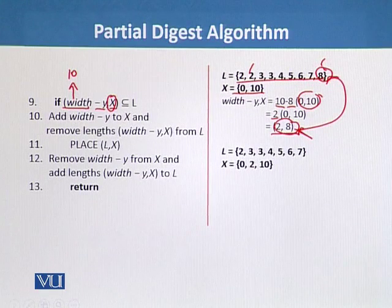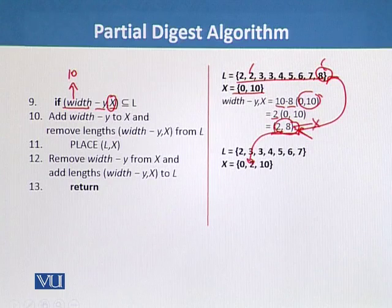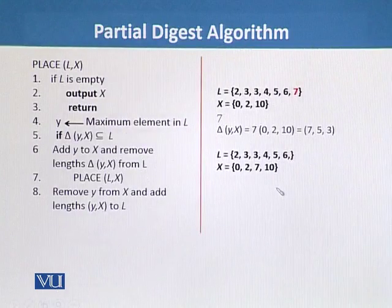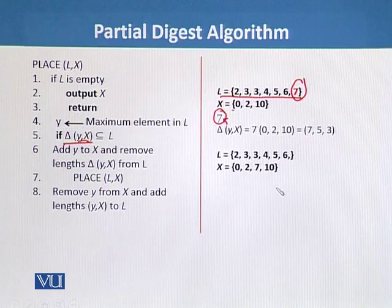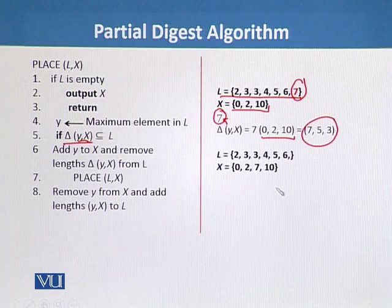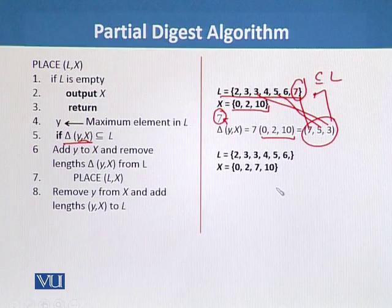Since {2, 8} is a subset of L, we take 2 into X and remove 8 from L — this matches the actual problem solution. In the next step we are left with a subset of L with highest element 7. We calculate delta(Y, X) with Y = 7 and X = {0, 10, 2}: after calculation we get {7, 5, 3}. We can see 7, 5, and 3 are all present in L, so it is a subset of L. We add 7 to X, so X becomes {0, 2, 7, 10}.